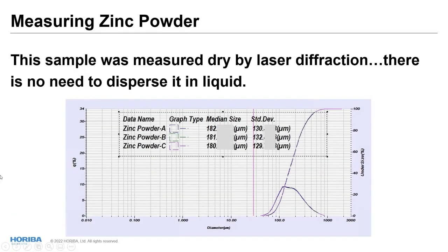Moving on in materials. This is zinc powder. We can measure it as a dry powder. And Sergey mentioned concerns about reactivity with air. If you have lithium compounds and you don't want to disperse them in water, you can run them as dry powders. But these are zinc powders, much larger materials, about 180 microns. You can see very closely grouped size results, 182, 181, 180 microns. The standard deviation listed here is due to the width of the distribution peak.